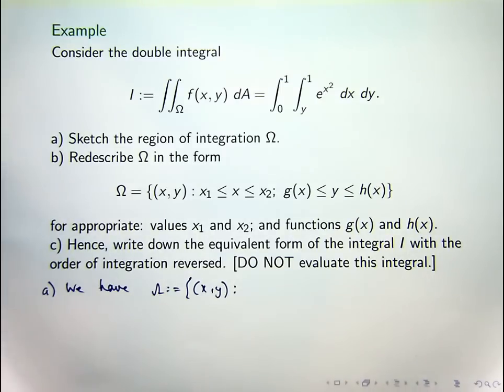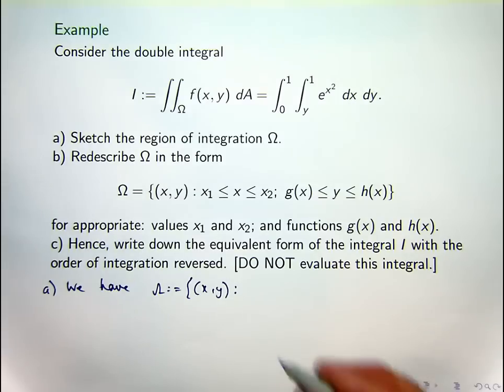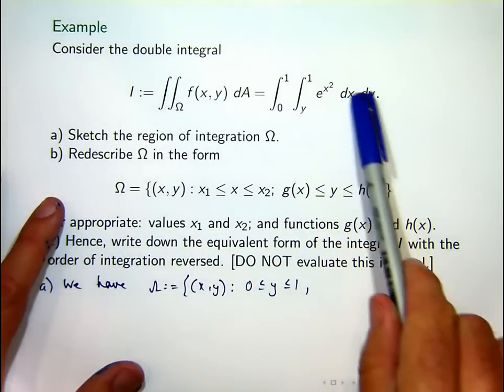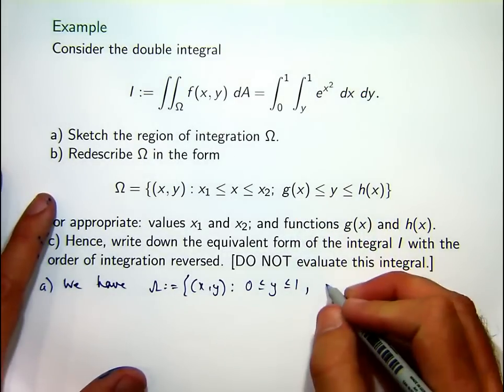So let's write this down in terms of Cartesian coordinates. So y, the outside differential, y will be between 0 and 1, and x will be between a function of y and another constant function of y.